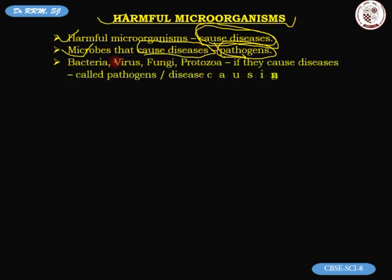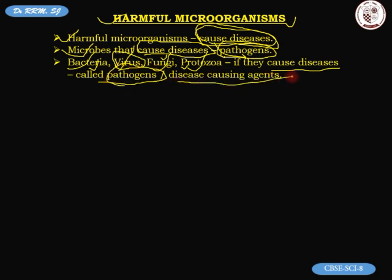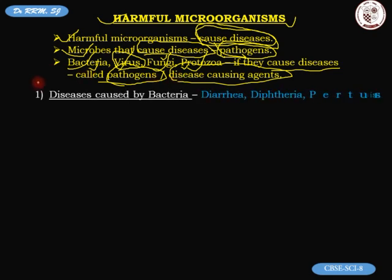There are four groups of microorganisms that cause diseases in humans: bacteria, virus, fungi, and protozoa. Viruses are the real disease-causing agents, whereas some bacteria are useful, and even fungi and protozoa. If these four groups of microorganisms cause diseases, we call them pathogens or disease-causing agents.